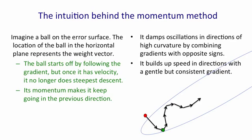What the momentum method does is it damps oscillations in directions of high curvature. So if you look at the red starting point, and then look at the green point we get to after two steps, they have gradients that are pretty much equal and opposite.